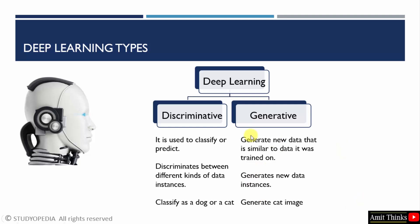Deep learning types include discriminative as well as generative. Previously we discussed classifying between a dog or a cat from a bunch of images. Discriminative deep learning is used to classify or predict — it discriminates between different kinds of data instances. You have some images and you want to classify them as a dog or a cat, so it will be able to discriminate between them and predict which of them is the picture of a dog or a cat.